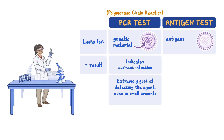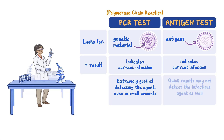An antigen test looks for molecules, called antigens, found on the surface of, or produced by, infectious agents. A positive antigen test indicates a current infection. Results from an antigen test are quick, usually available in about 15 to 30 minutes. However, the antigen test may not detect the infectious agent as well as a PCR test.